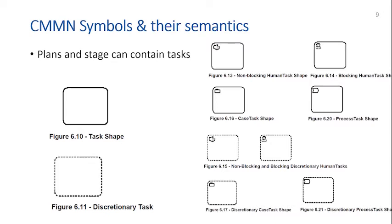Plans and stages can contain tasks. The basic shape of a task is the same as in BPMN — a rectangle with rounded corners — and when it's discretionary, it has a dashed border. There are different types of tasks, though fewer than in BPMN: the non-blocking and blocking human task, a case task shape where the task is itself the handling of a case, and a process task shape where the activity is the execution of a process — which you could define, for example, by means of BPMN.